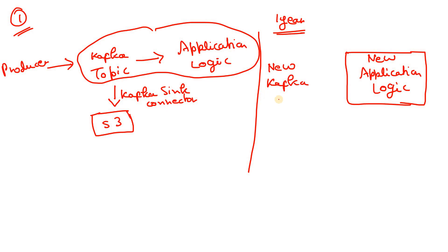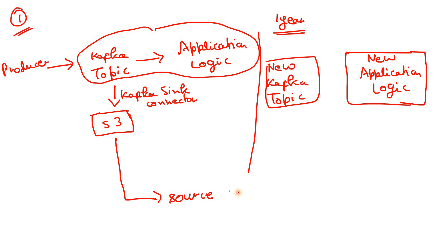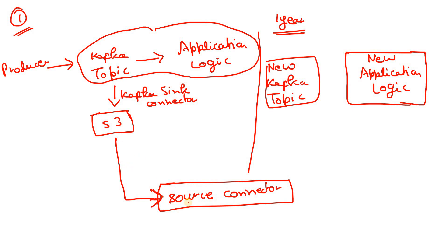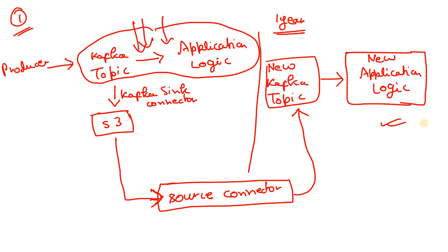In this approach, we create a new Kafka topic. From S3, using a source connector — it's called a source connector because it writes data into a Kafka topic from an external source — we load the past one year's data into our newly created Kafka topic. Then using the same application logic and connection code we already have, we process that past one year's data with the new business logic.